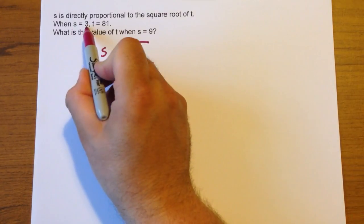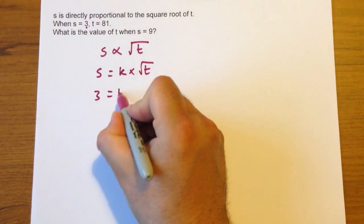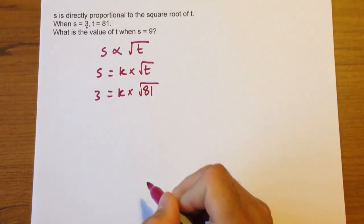Substituting what we know, we know when s is 3, we know t is 81. So k times square root of 81.